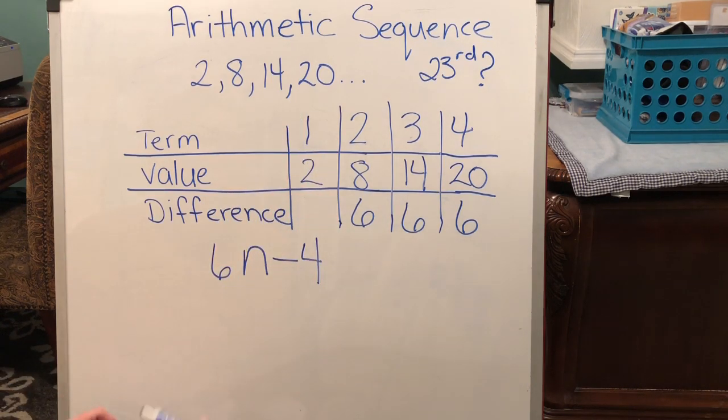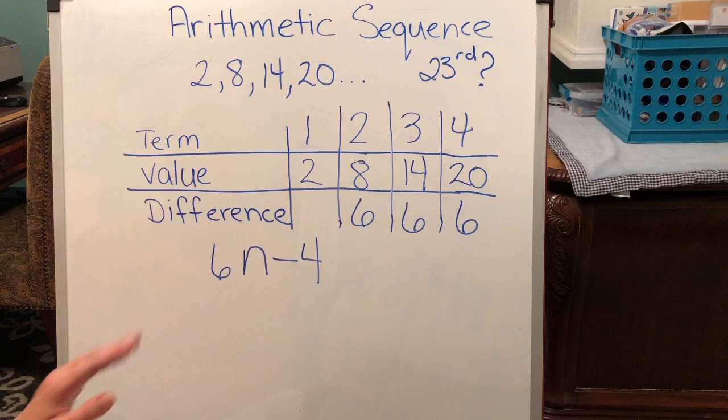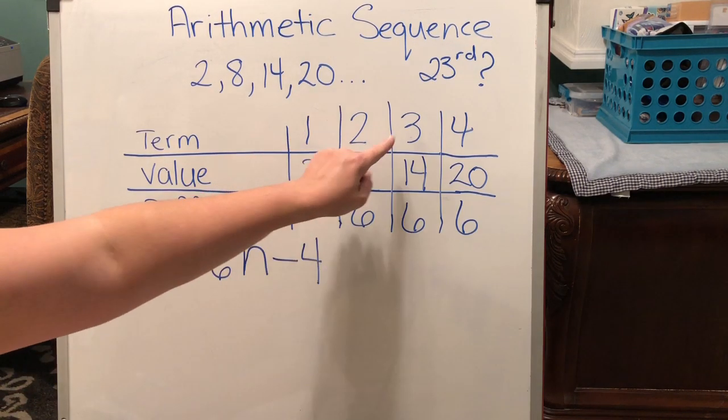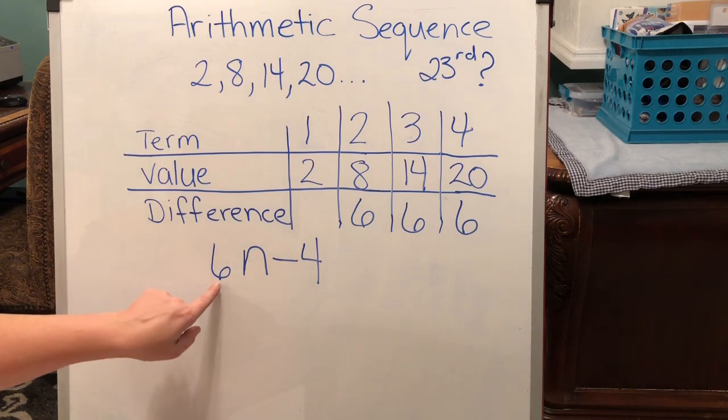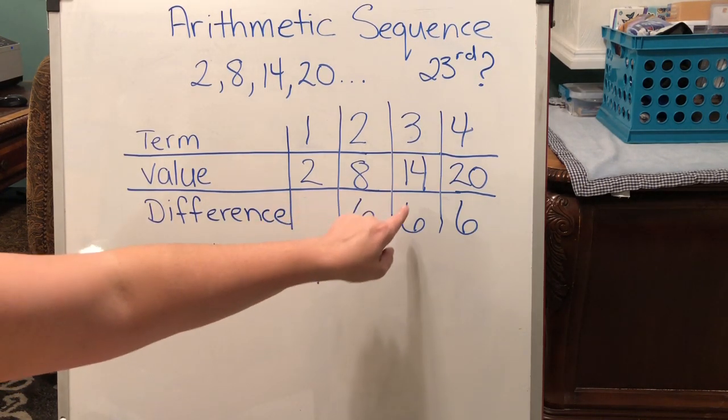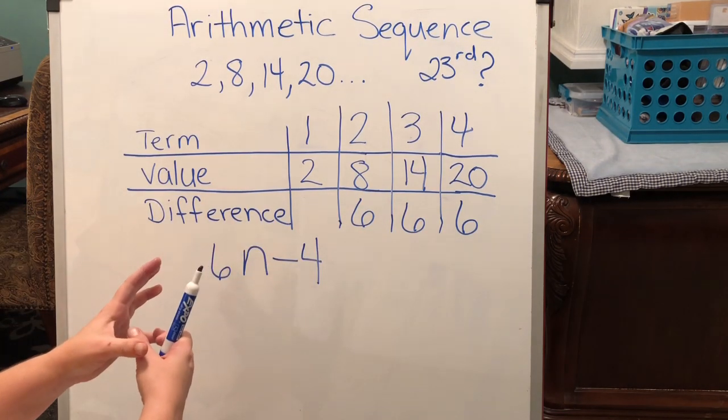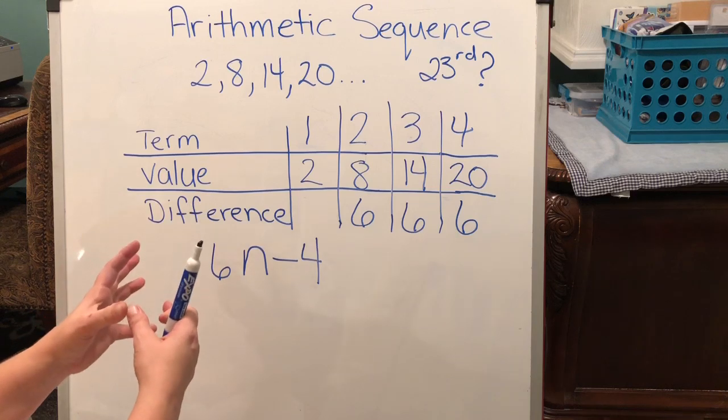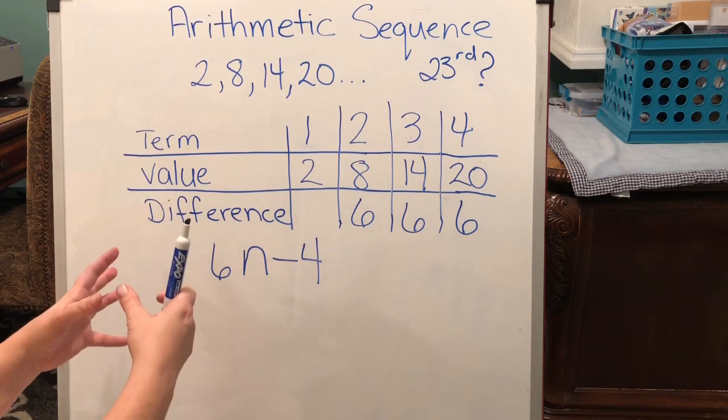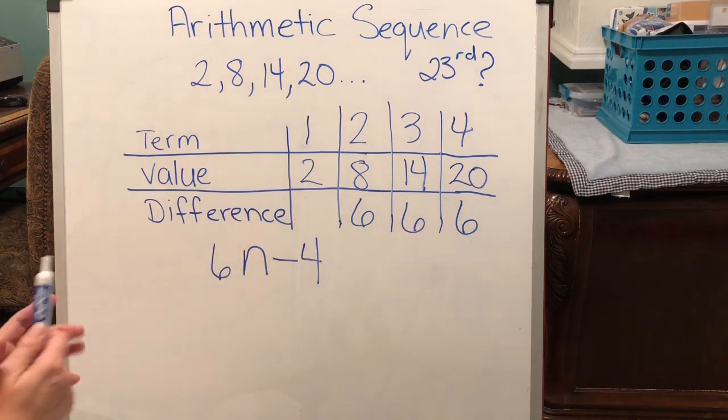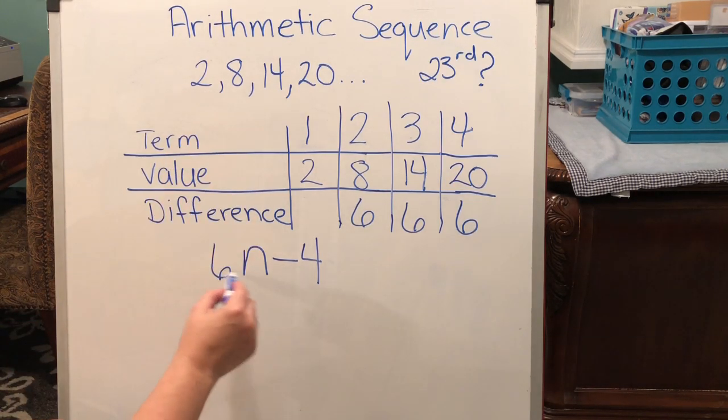Each term is the same. So, I have created the formula. The first thing I did was say the term number n, the term number 1, 2, 3, 4, multiplied by the common difference, which I found, 6. And then I multiplied those two together. I got the answer for that term and said, okay, that's not the answer I want. What do I have to do to get to the correct answer? So, now that I've tested my formula, I'll go ahead and test it with 20.